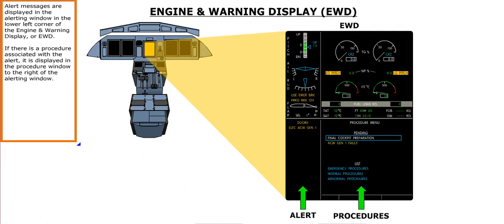Alert messages are displayed in the alerting window in the lower-left corner of the engine and warning display, or EWD. If there is a procedure associated with the alert, it is displayed in the procedure window to the right of the alerting window.